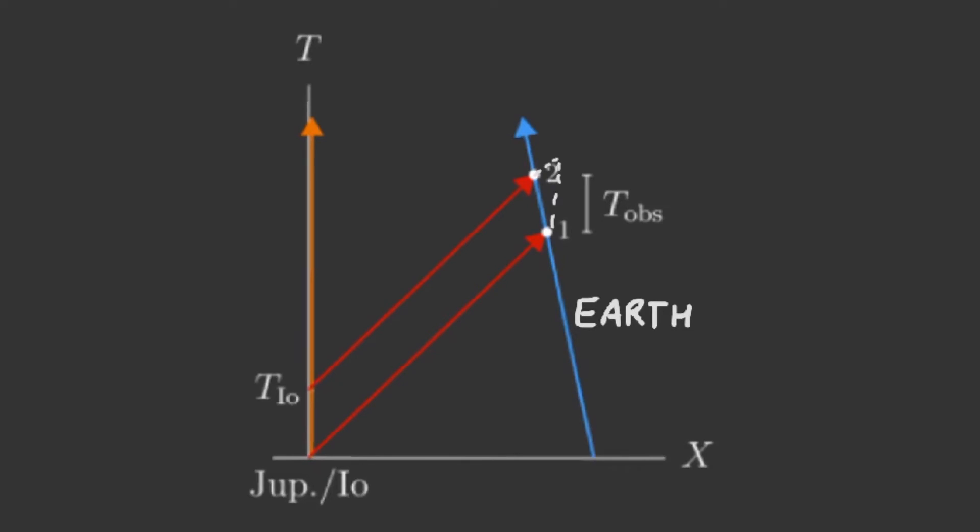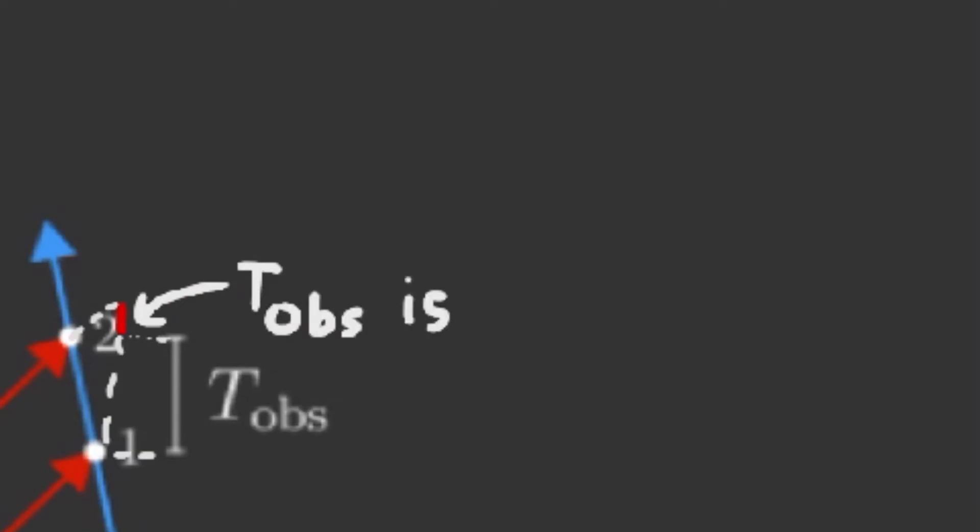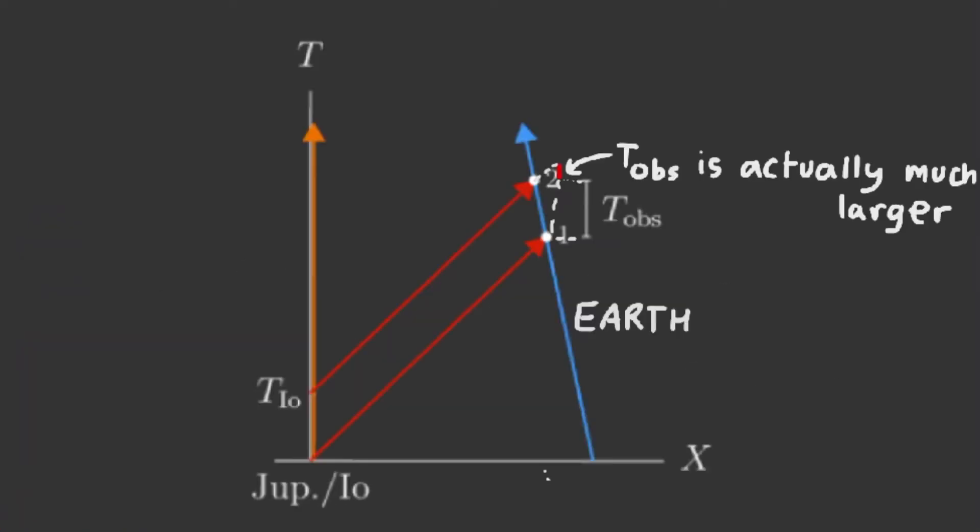Now, this causes a massive problem. Due to the tilt, an observer on Earth would notice the time interval of Io to be much shorter than it really is. So what is the key to the solution? Rømer realized that the real time interval of Io was always absolute, it would never change. Thus, could he find a way to write the observed time, T_obs, in terms of T_Io? Yes, of course!